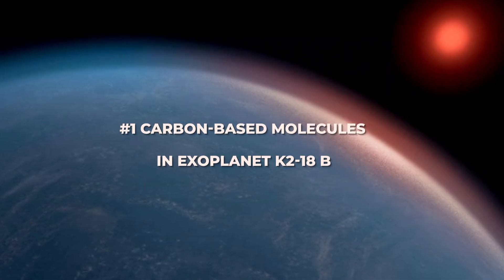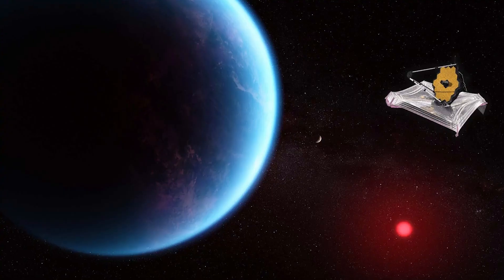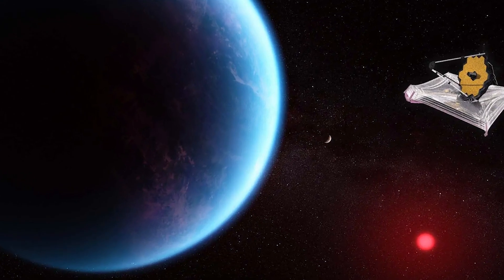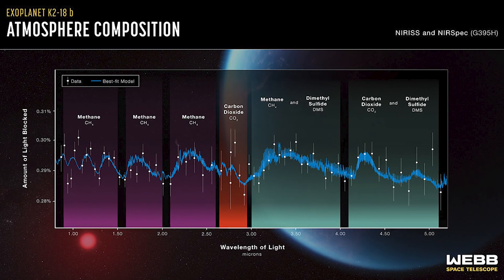Number 1: Carbon-based molecules in exoplanet K2-18b. In September 2023, the JWST detected carbon-bearing molecules such as carbon dioxide and methane in the atmosphere of the exoplanet K2-18b.